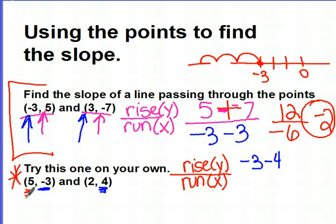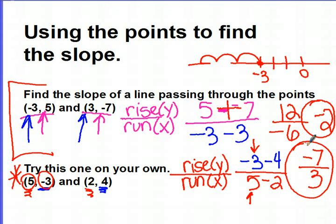Now we're going to find the difference in the x values. 5 minus 2. Always starting with the point on the left. Make sure those numbers are in front. Negative 3 take away 4, it's negative 7. And 5 minus 2 is 3. Check your work to see if you got negative 7 thirds for your slope. If you didn't, pause the movie now and go back to find your mistake and fix it in your notes.